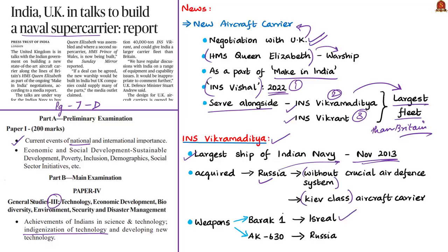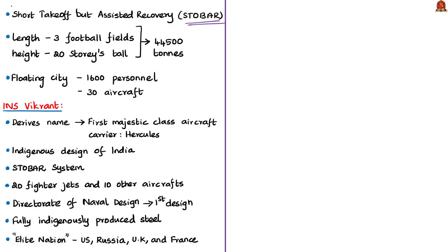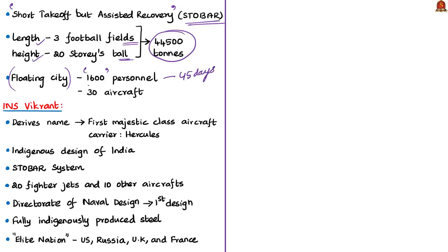INS Vikramaditya has the Israeli-supplied Barak point defense missile system and the Russian-origin AK-630 close-in weapon system installed. It has a STOBAR system — short takeoff but assisted recovery — as its aircraft launch and recovery system. Vikramaditya is a floating airfield with an overall length equivalent to three football fields and standing about 20 storeys tall from keel to highest point. It is a 44,500-tonne mega structure with over 1,600 personnel on board, capable of sustaining itself at sea for about 45 days and carrying over 30 aircraft.